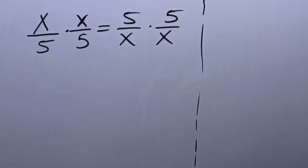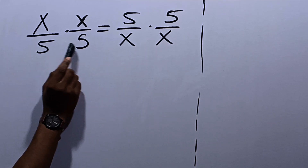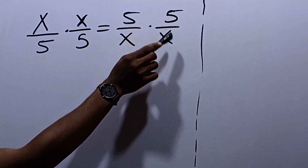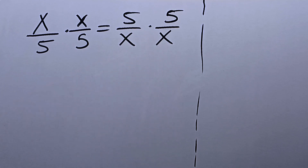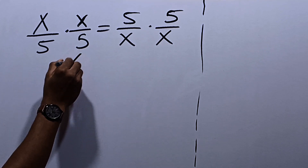Let's solve this question together. It says x over 5 dot x over 5 is equal to 5 over x dot 5 over x. We're required to solve for the values of x.